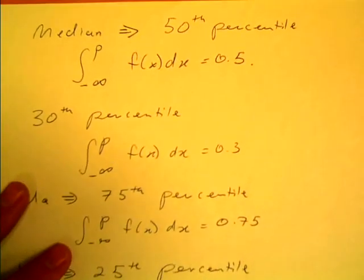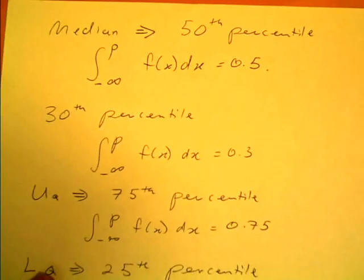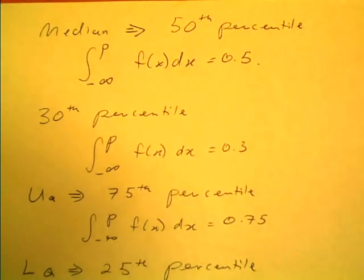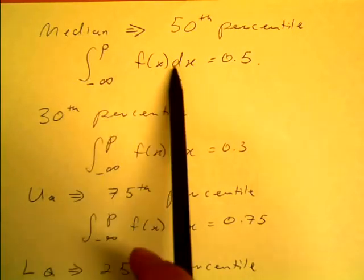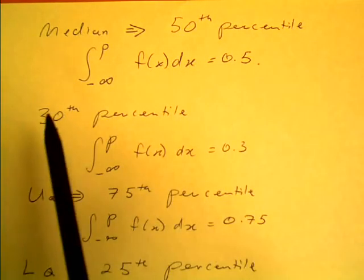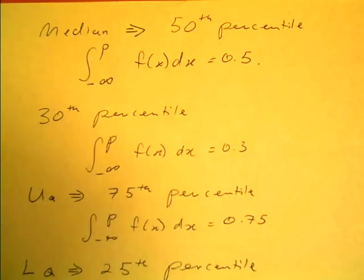So, you should be able to recall from statistics courses you've done in the past that the median is just a 50th percentile for a set of data, but when we look at that in terms of probability density functions and continuous random variables, what we actually mean is the value of x such that this integral from minus infinity to p of f of x dx equals 0.5 where p is that value of x where that occurs.